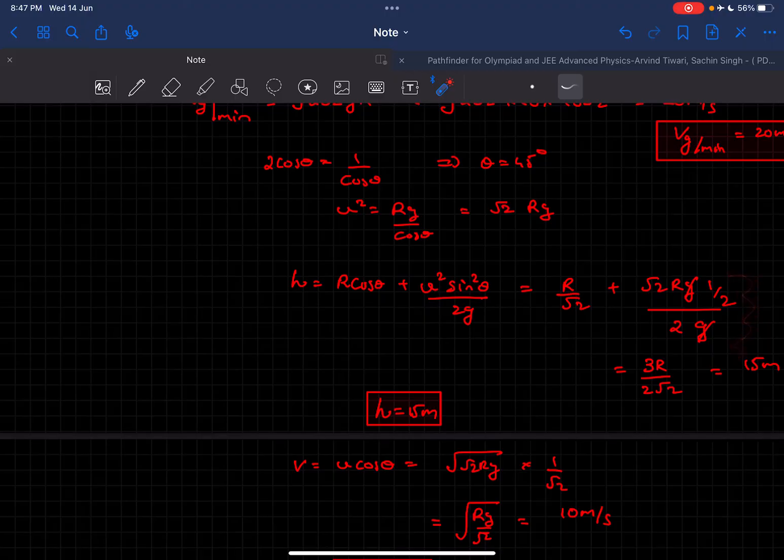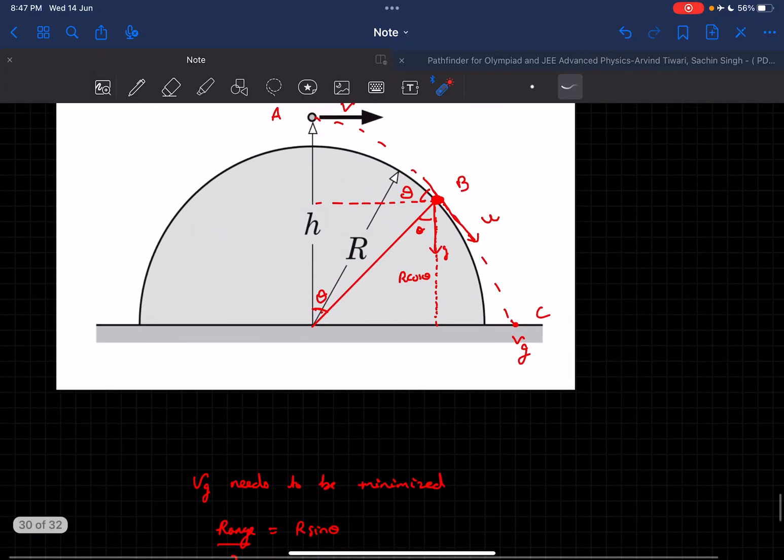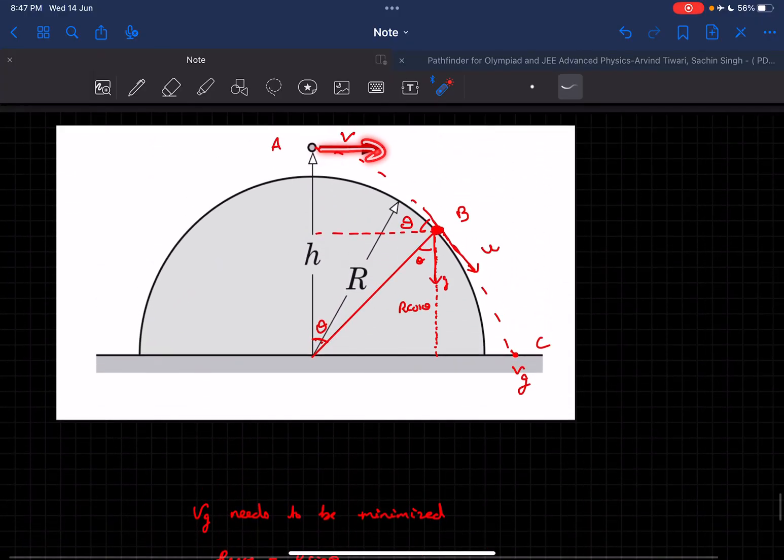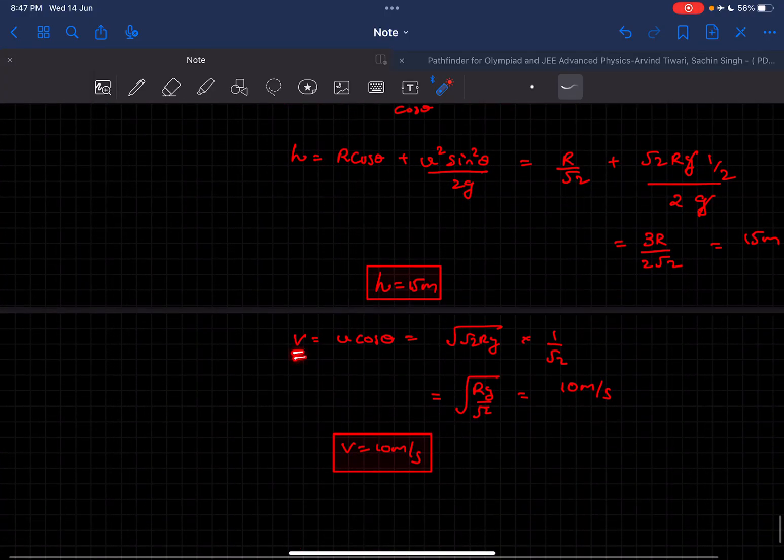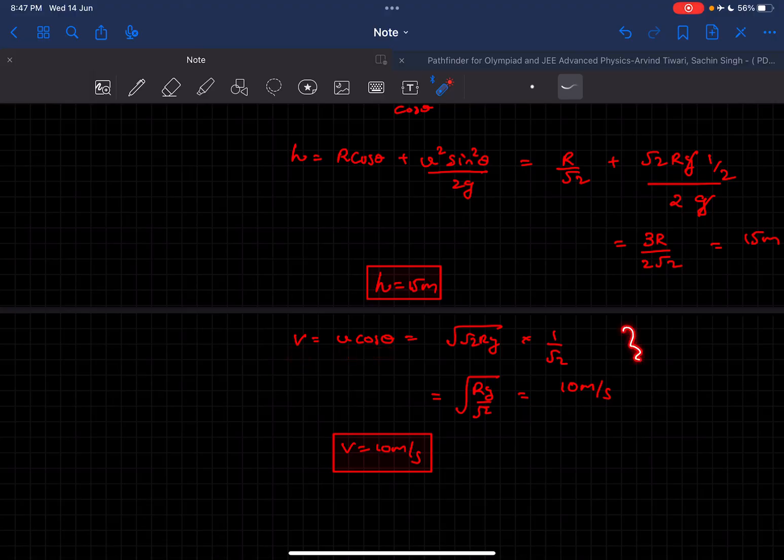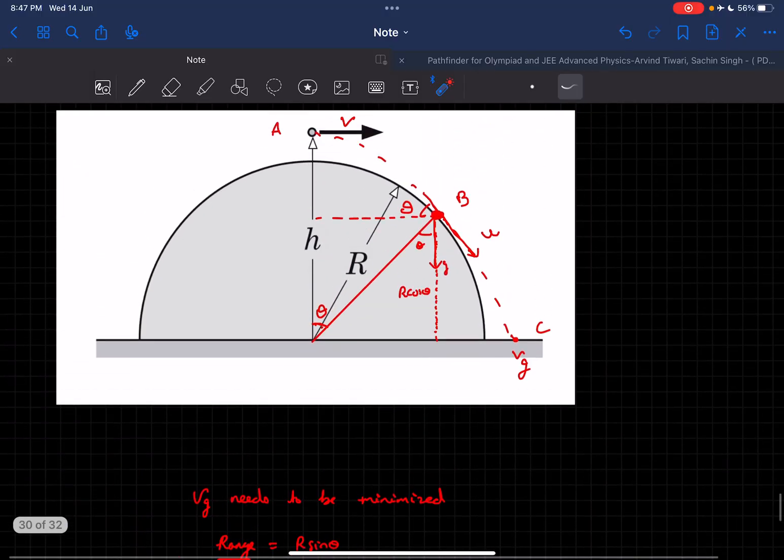Finally, we need to find the velocity of projection, which is the velocity at the highest point of the projectile: v = u cos(theta). After solving, we get v = 10 meters per second. That's the solution to this problem. Thanks for watching!